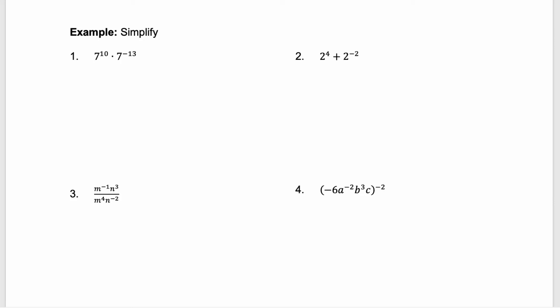Let's look at some more exponent properties. For these next four problems, we need to simplify. In example 1, notice that we have the product rule. Both of these have the same base, 7, so we can keep that base, and since they're being multiplied together, we can add their exponents. So we have 7 to the power of 10 plus negative 13, or 7 to the power of negative 3. Now we have a negative exponent, so 7 goes into the denominator with a positive exponent — 1 over 7 cubed. And 7 cubed is 343, so this is 1 over 343.